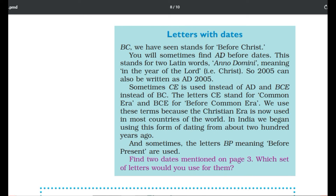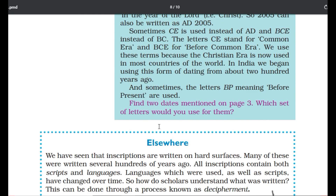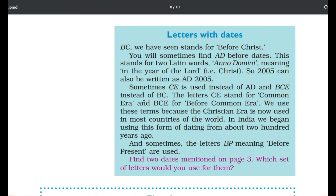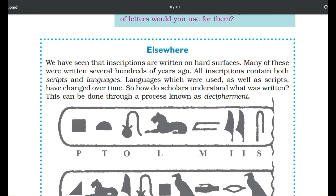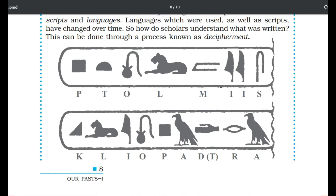AD stands for 'Anno Domini', and CE stands for 'Common Era', while BCE stands for 'Before Common Era' — these are alternative letters used instead of BC and AD. We have seen that inscriptions are written on hard surfaces; many were written several hundreds of years ago. All inscriptions contain both scripts and languages, and these have changed over time. Scholars understand what was written through a process known as decipherment.